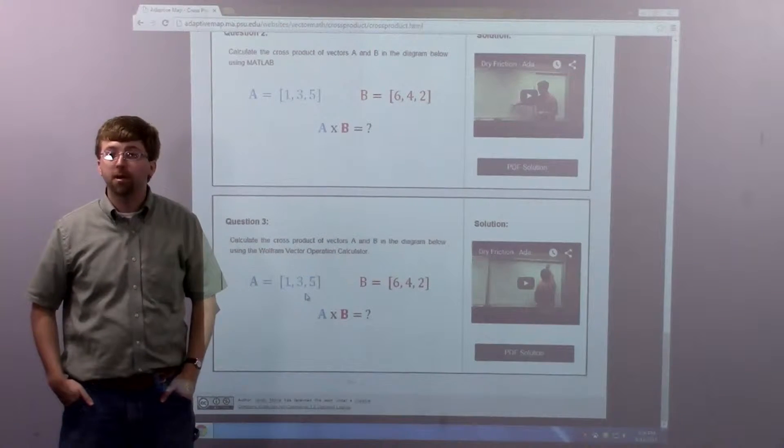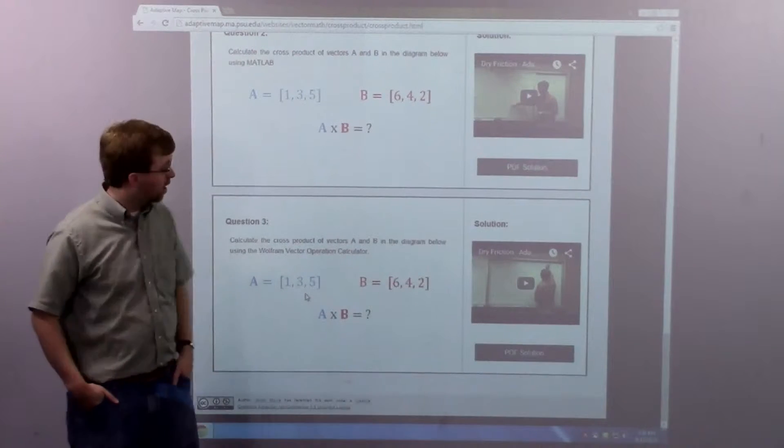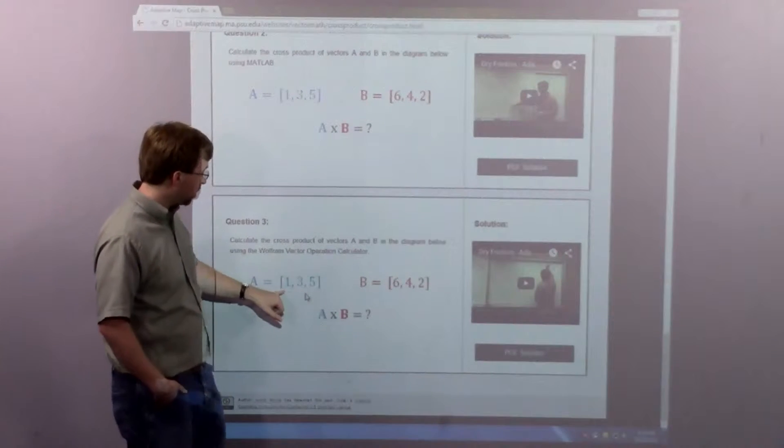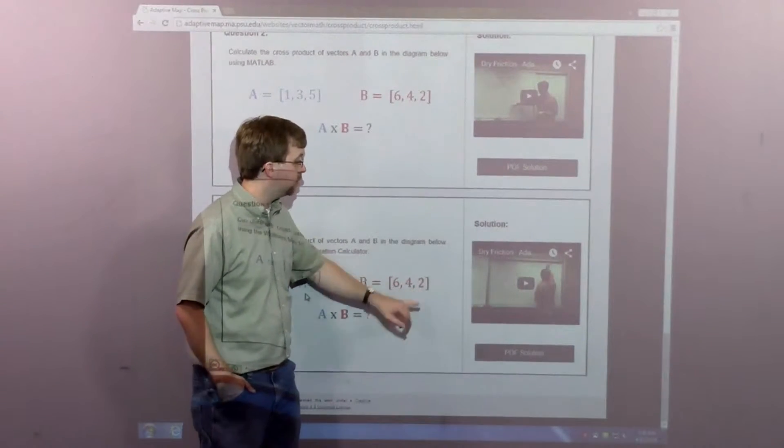Hello, for this worked example problem, I am asked to find the cross product of vectors A and B. A is 1, 3, 5, and B is 6, 4, 2.